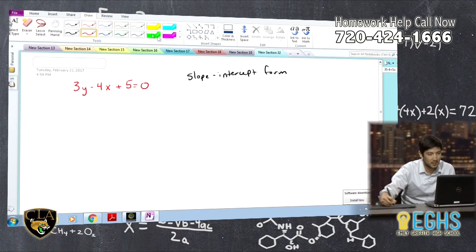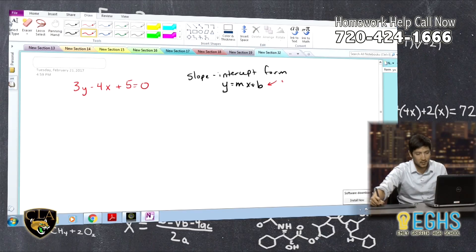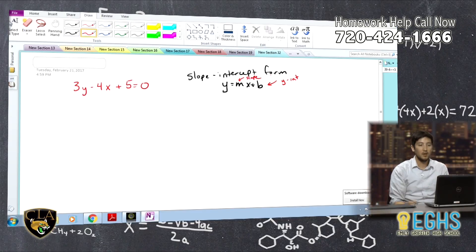So, slope-intercept form is this form, y equals mx plus b. So, we have a couple components to that. If you remember what these values mean, this is my y-intercept, and this is my slope, that little m there.